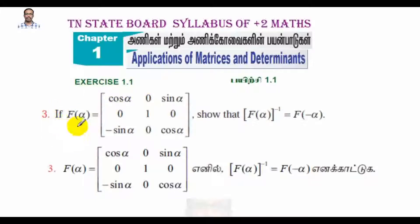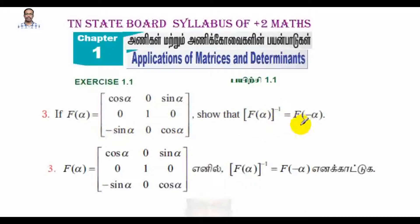The problem states: if f(α) is equal to the matrix [cos α, 0, sin α; 0, 1, 0; -sin α, 0, cos α], show that f(α) inverse is equal to f(-α).